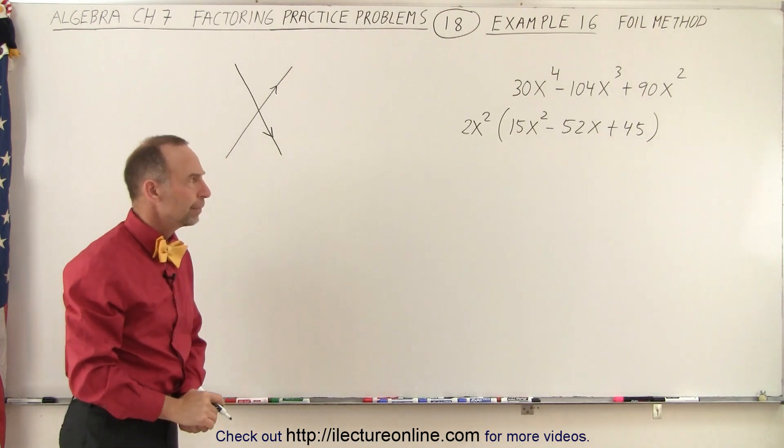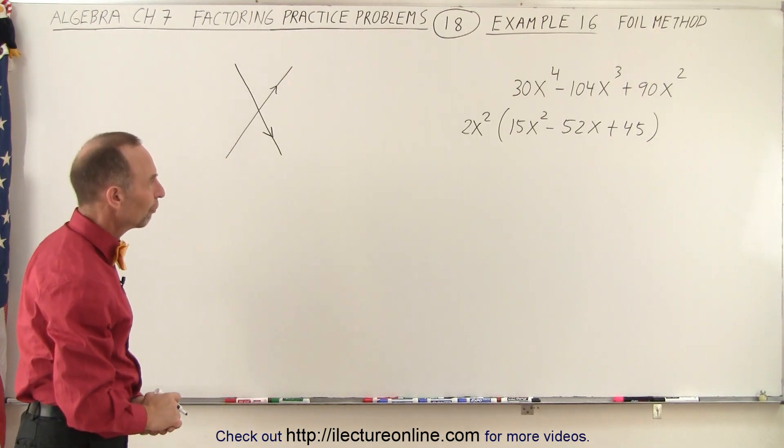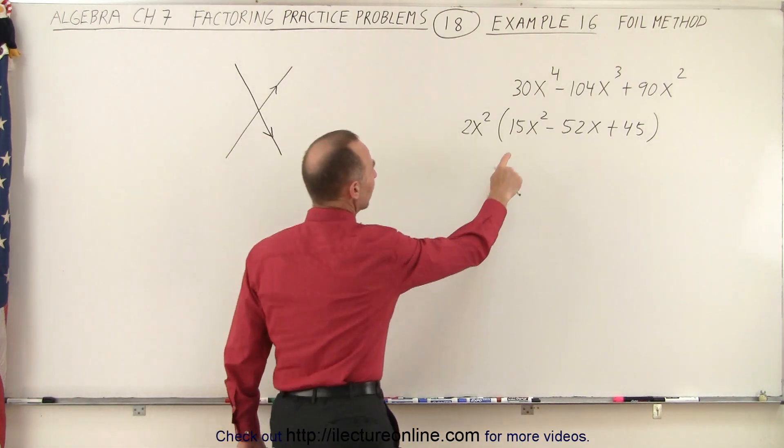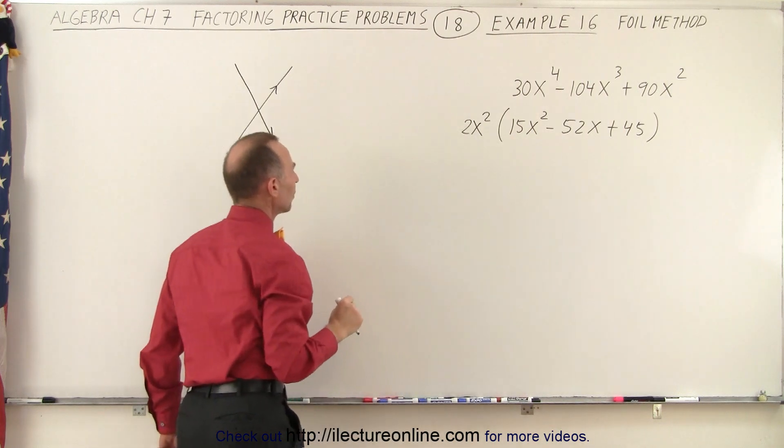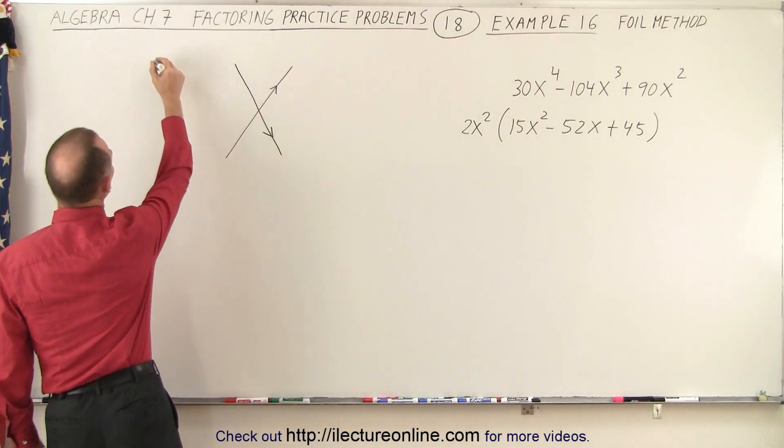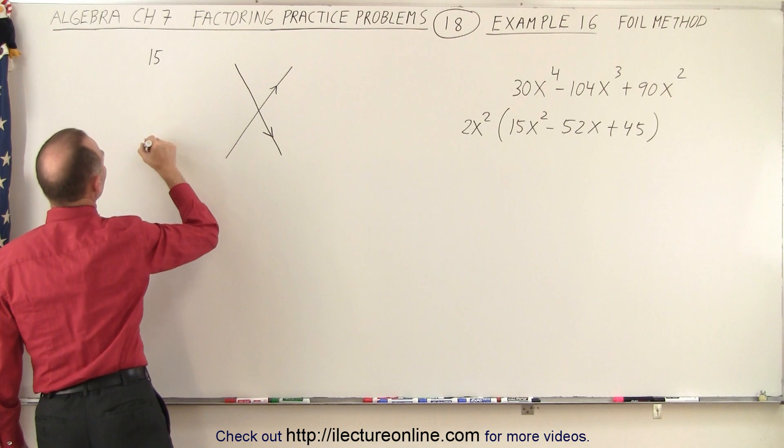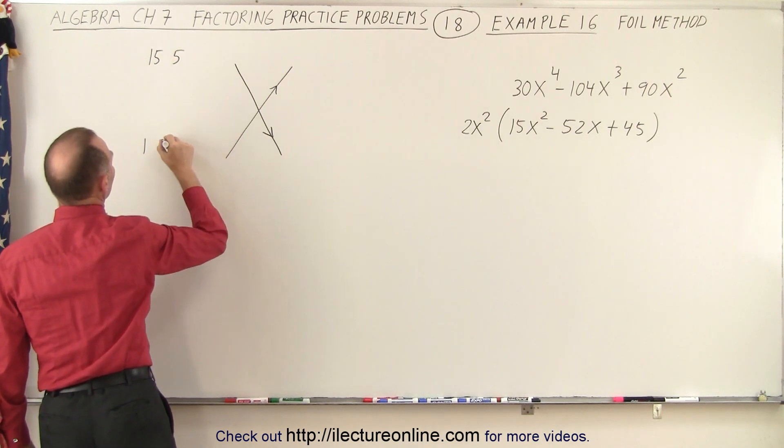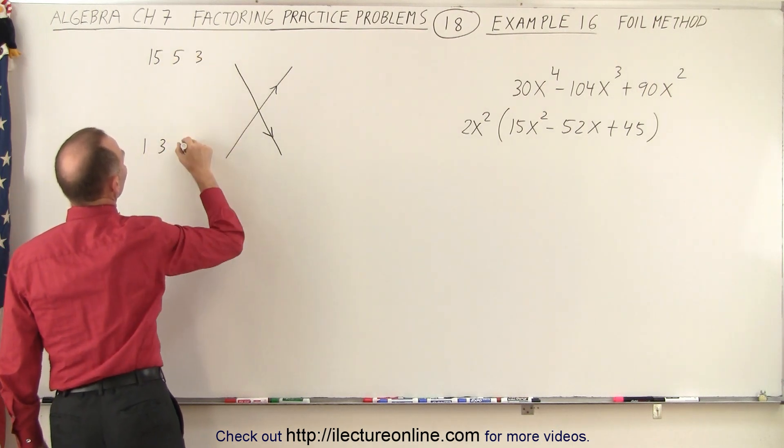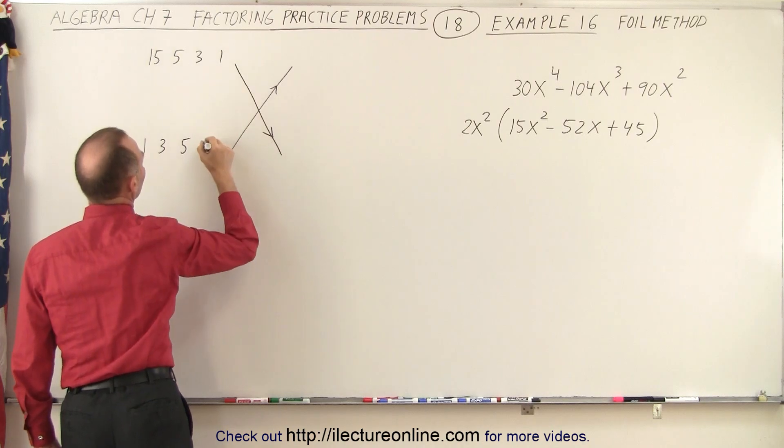All right. Now, how do we use the FOIL method? We look at the first number here and look for all the combinations that we can have. So the combination would be 15 and 1, 5 and 3, 3 and 5, and 1 and 15.